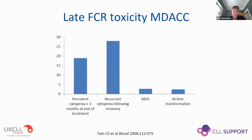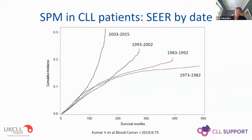MD Anderson data on longer-term follow-up showed about one in five patients had persistent bone marrow suppression, and about 3-4% developed myelodysplasia following therapy. This is important because if we look at the incidence of cancer - Hodgkin lymphoma is the greatest example - where primary therapy is extremely effective, with long-term follow-up the biggest risk to patients becomes their treatment rather than their disease. We may start to see the same thing in CLL as treatment gets better, duration of responses improves, and patients live longer.